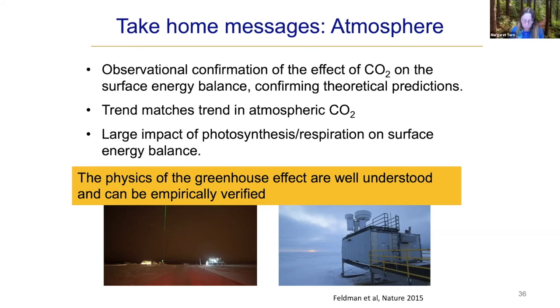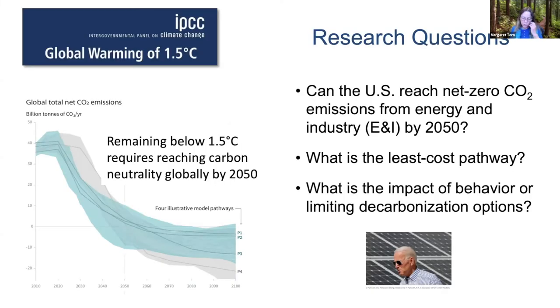So now we've confirmed that CO2 traps as much radiation as projected. The question is: how do we stop the trend of increasing CO2 concentrations? To avoid the worst of anthropogenic climate change, the IPCC has concluded we need to stay below 1.5 degrees of warming. Achieving this goal requires that our global societal greenhouse gas balance is net neutral by 2050. President-elect Joe Biden has made carbon neutrality by 2050 a center of his environmental platform.